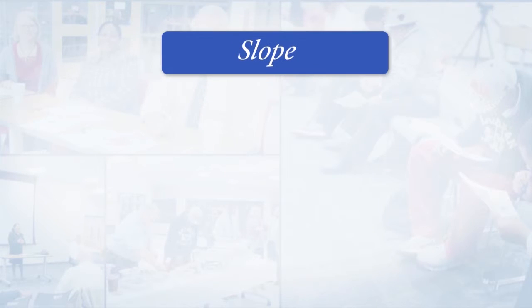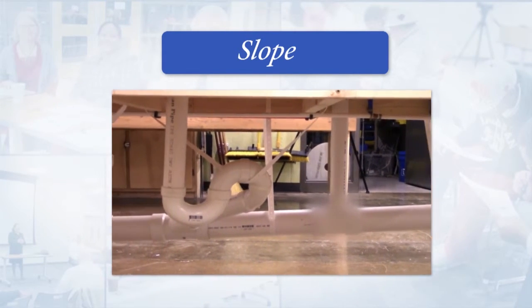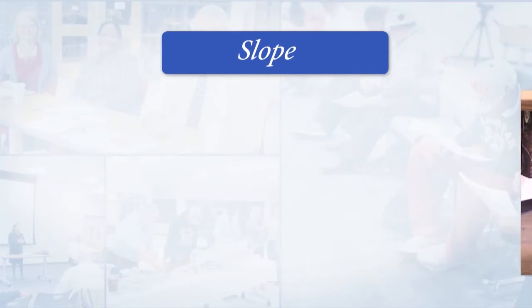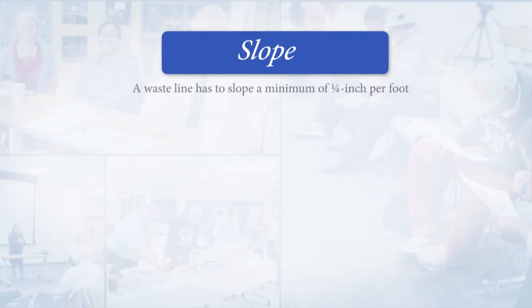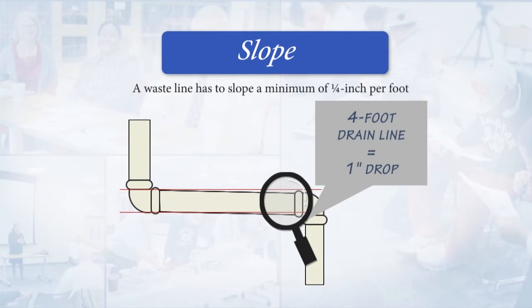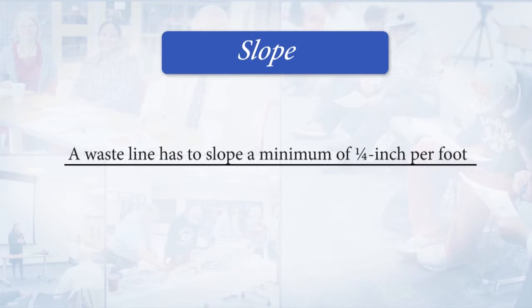There are a couple of things you need to know about waste systems. There has to be slope — water runs downhill and it runs better downhill, not on a level plane. Codes on three-inch and four-inch pipe dictate that slope is measured by foot of run of pipe. For example, a four-foot drain line must have one inch of drop, and an eight-foot drain line must have two inches of drop. That's using the quarter-inch drop per foot of run. It can't lay level; it has to drop in the direction of flow.